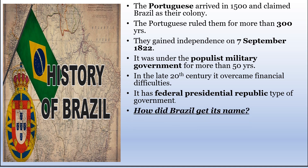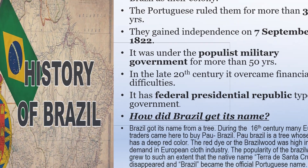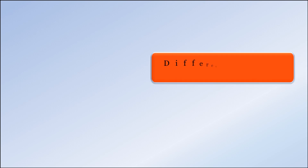An interesting question is how Brazil got its name. Brazil got its name from a tree. During the 16th century, many European traders came here to buy Pau Brazil, a tree whose wood is red in color. The red dye or Brazil wood was high in demand in the European cloth industry during that time. The popularity of the Brazil wood grew to such an extent that the native name Terra da Santa Cruz disappeared and Brazil became the official Portuguese name.